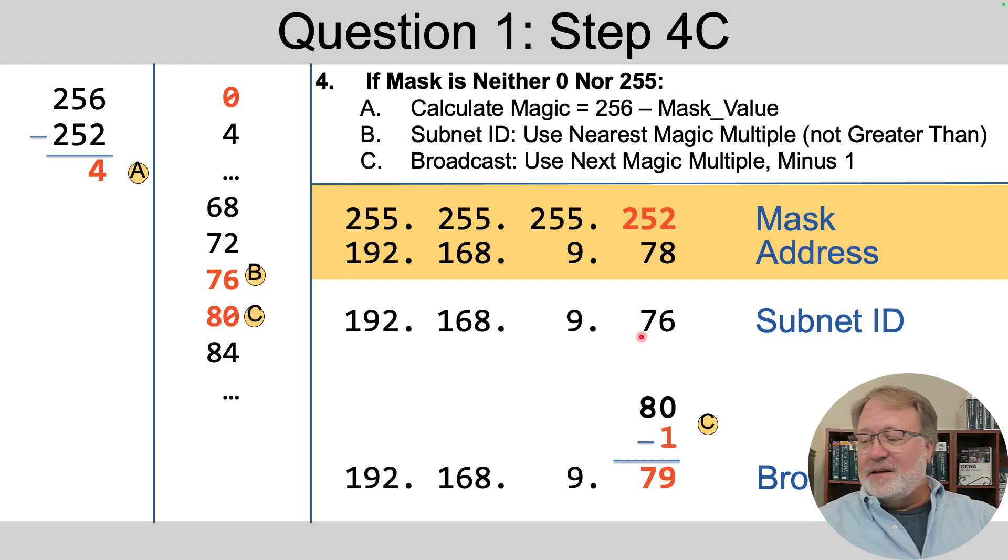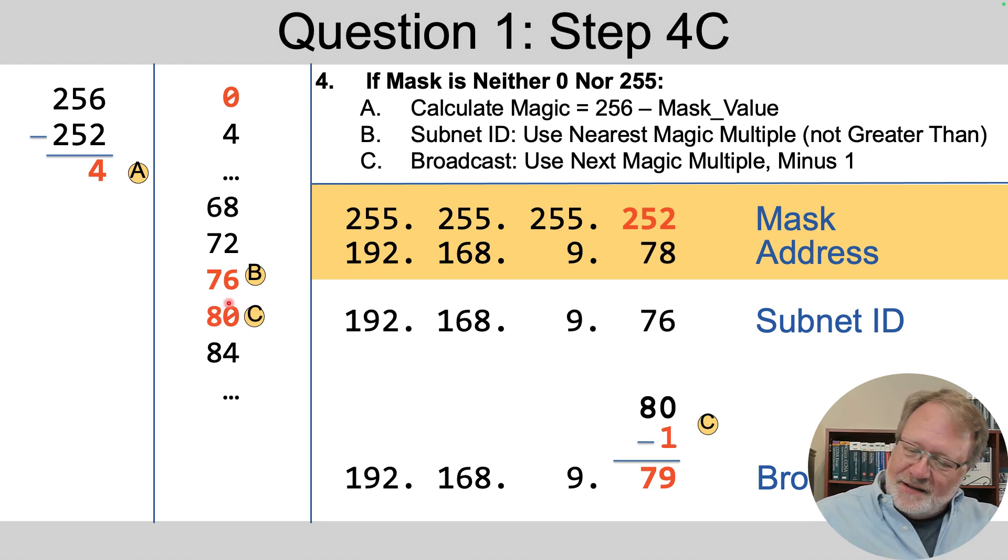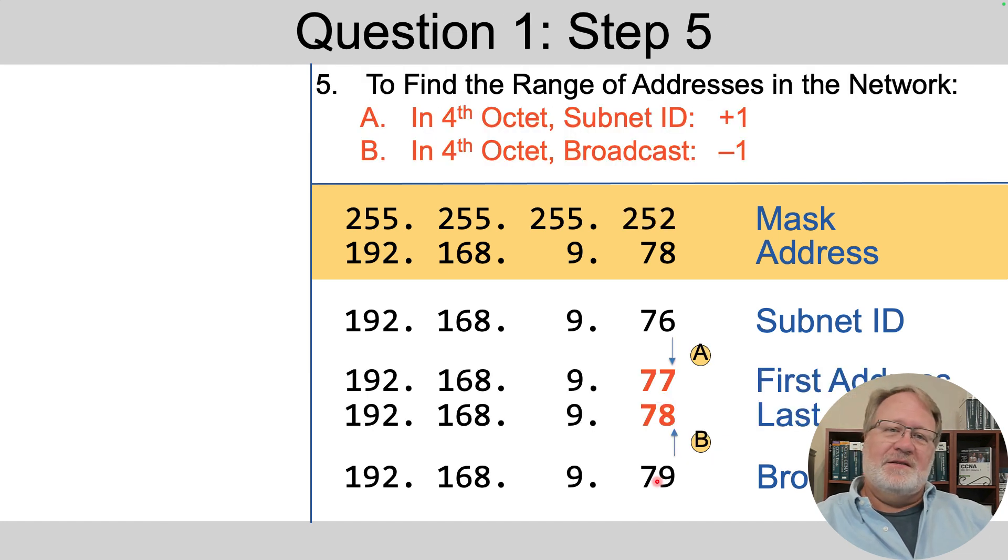Then to find the subnet broadcast address, we take the next multiple of four and subtract one. So next multiple is 80 minus 1, 79 here. Now, once you have the subnet ID and subnet broadcast address, finding the first and last address is easy. You add one in the fourth octet of the subnet ID, you subtract one in the fourth octet of the subnet broadcast address. The first three octets stay the same in this bit, and you've found all the right answers.